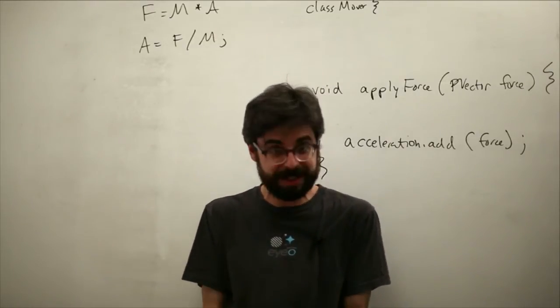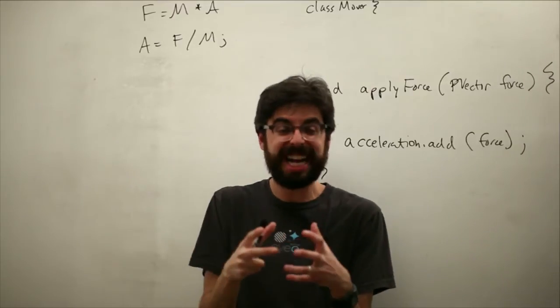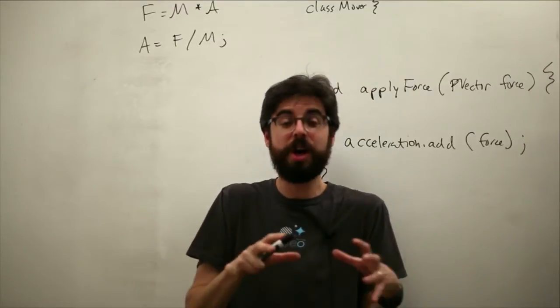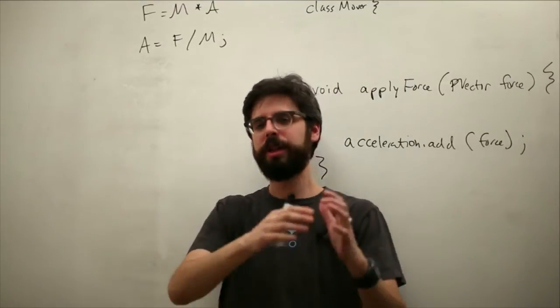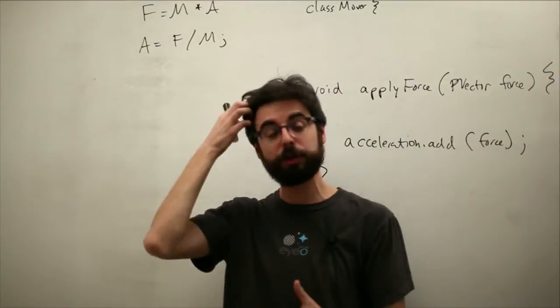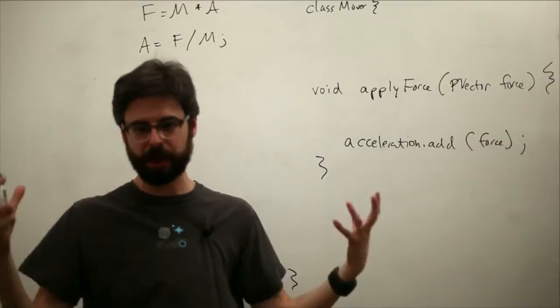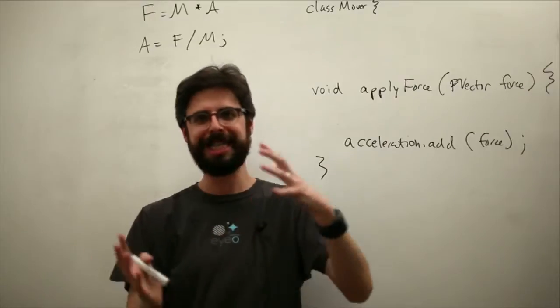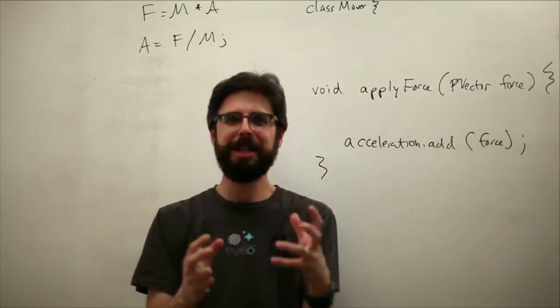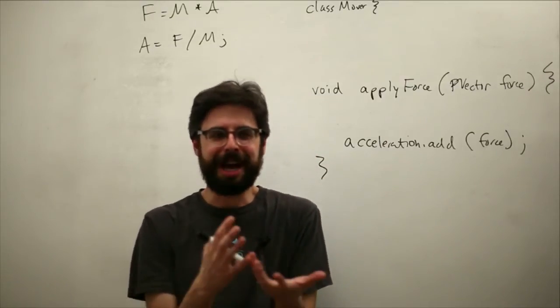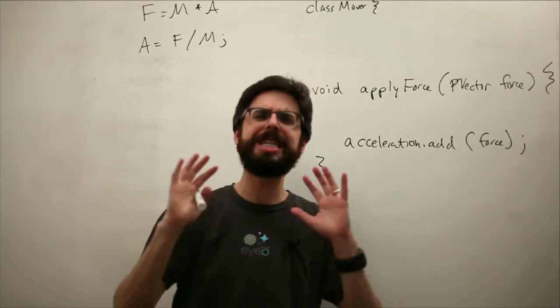So we're just kind of making up numbers for mass. Most likely, it would probably make sense to have mass be tied to the size of something we draw. So the diameter of a circle, the width and height of a rectangle, those might be values we tie to mass. The bigger it is, the more massive it is. We could get into density, which is, you know, if it's not very dense, it's going to have a lower mass even if it's big. But, you know, we don't need to get that far into it.